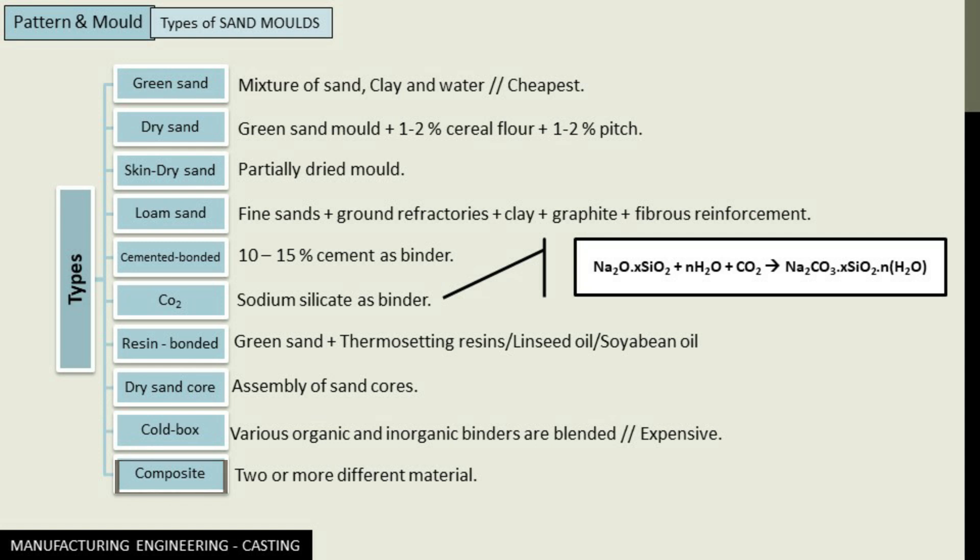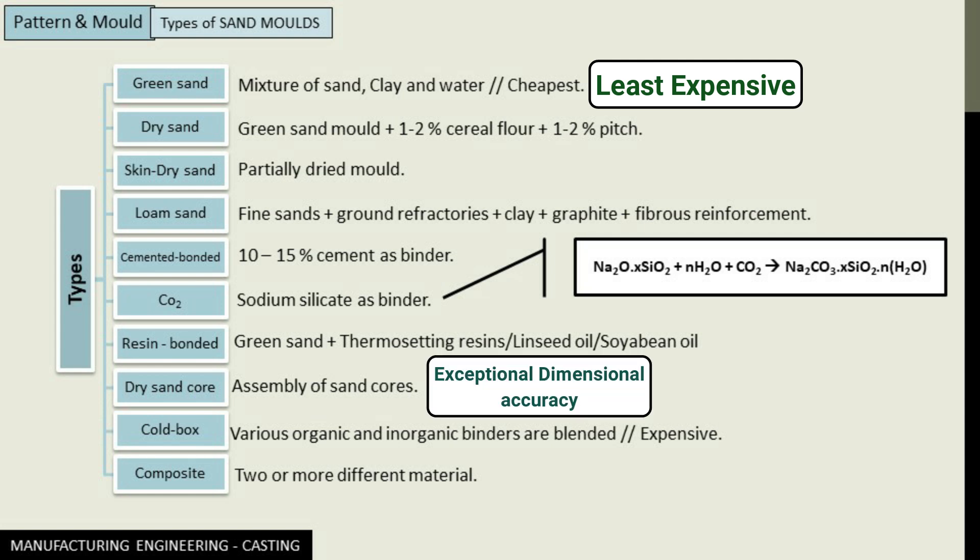So out of all these kinds of sand molds, the green sand mold is the least expensive, the dry sand core molds have exceptionally good dimensional accuracy, and the carbon dioxide infused CO2 molds can give very high rates of production.